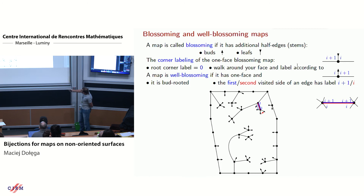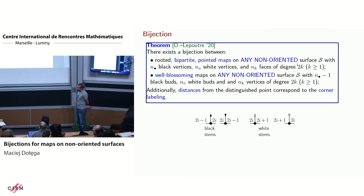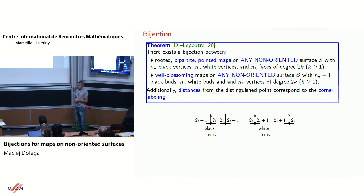Here is an example: starting from a site with label 1, the well-blossoming condition requires the other side of that edge to have label 0. The main theorem states there is a bijection between bipartite pointed maps on any surface — including non-oriented — and well-blossoming maps on the same surface. All the relevant statistics are transferred: you can control the number of black vertices, white vertices, and face degrees. Additionally, distances from the distinguished point correspond to the corner labeling.